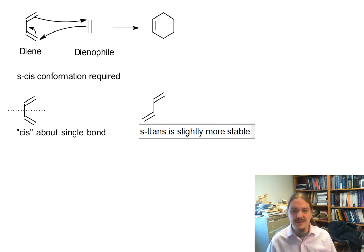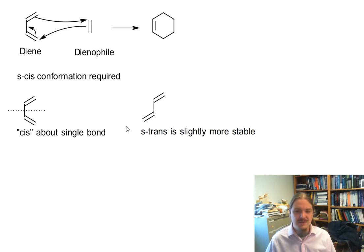The trick is that the S-trans conformation of the zigzag-looking conformation, it's trans about that single bond, is actually slightly more stable. So for most dienes, there's actually a little bit of an energy input requirement to get from the S-trans to the S-cis conformation.